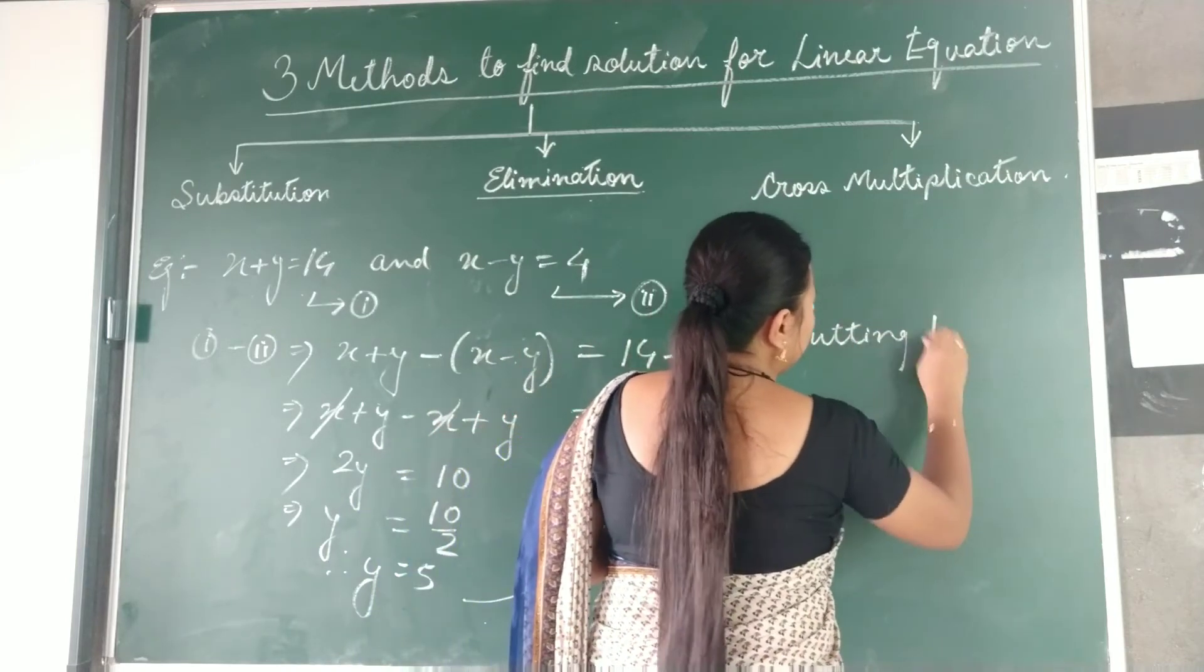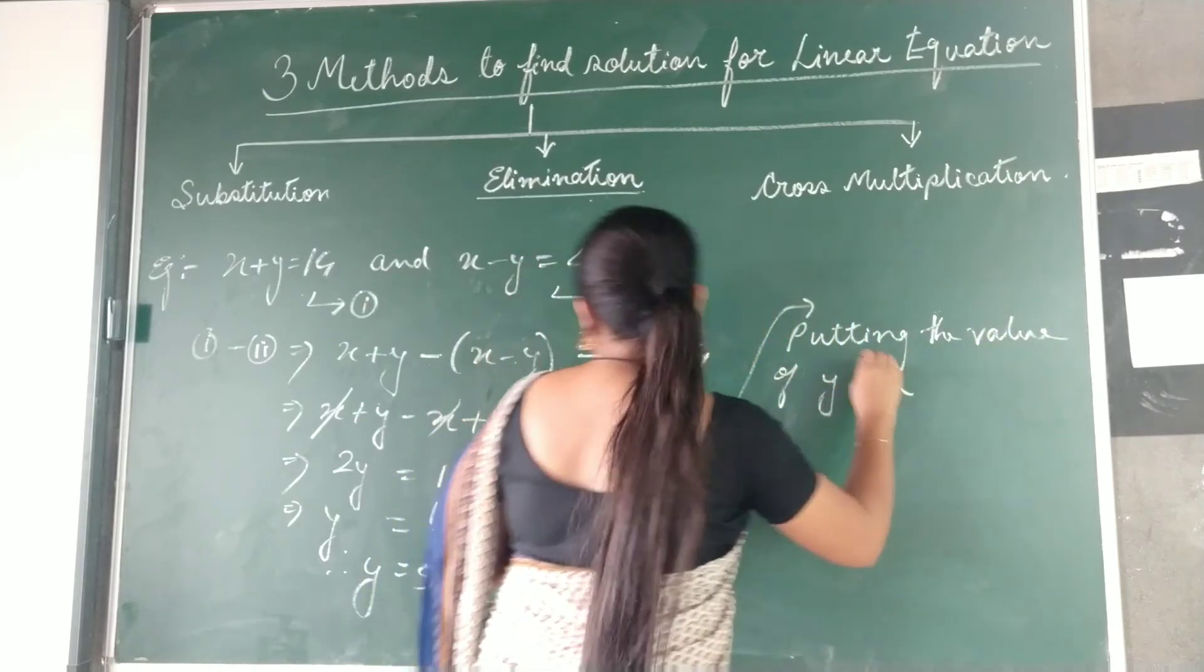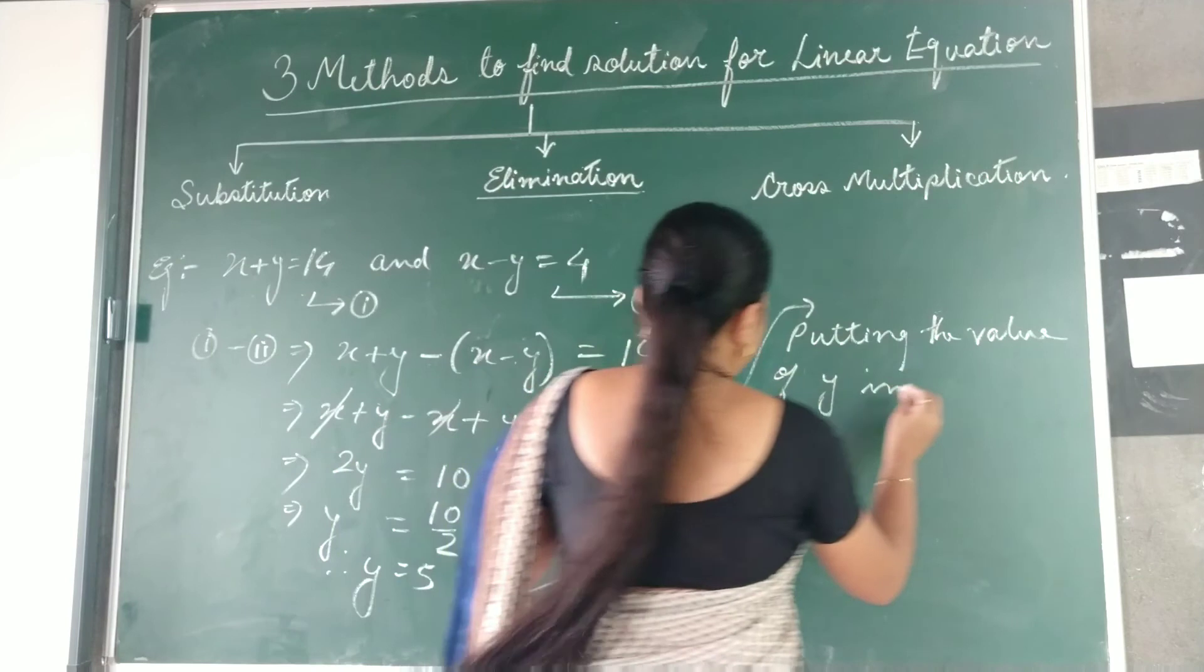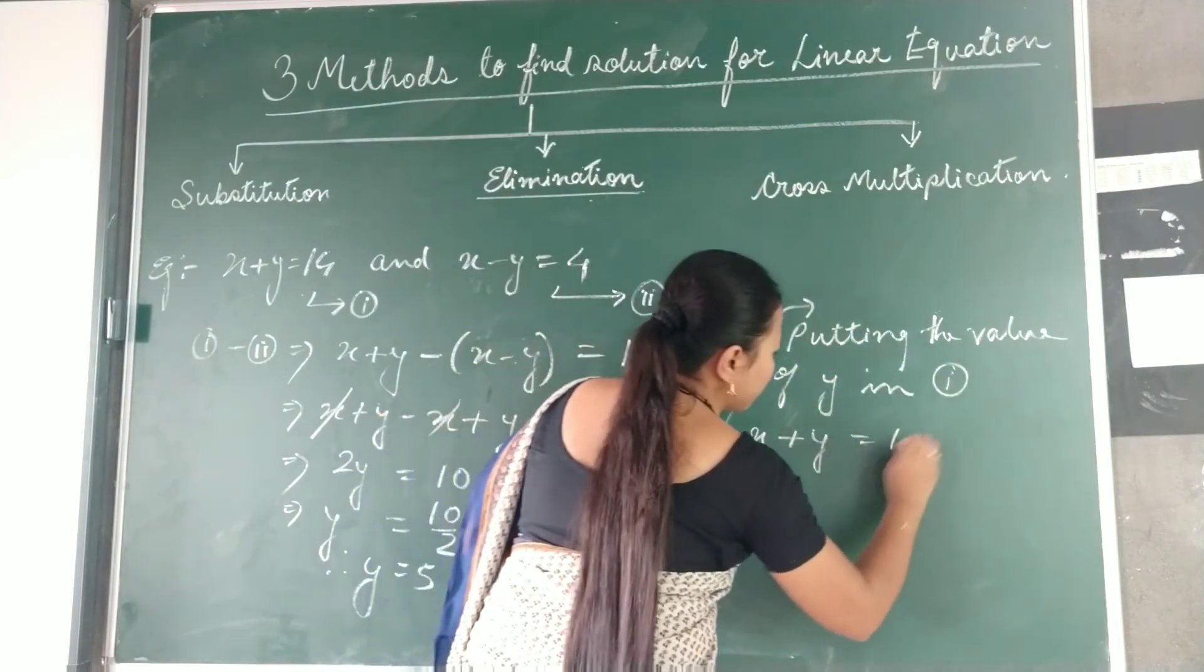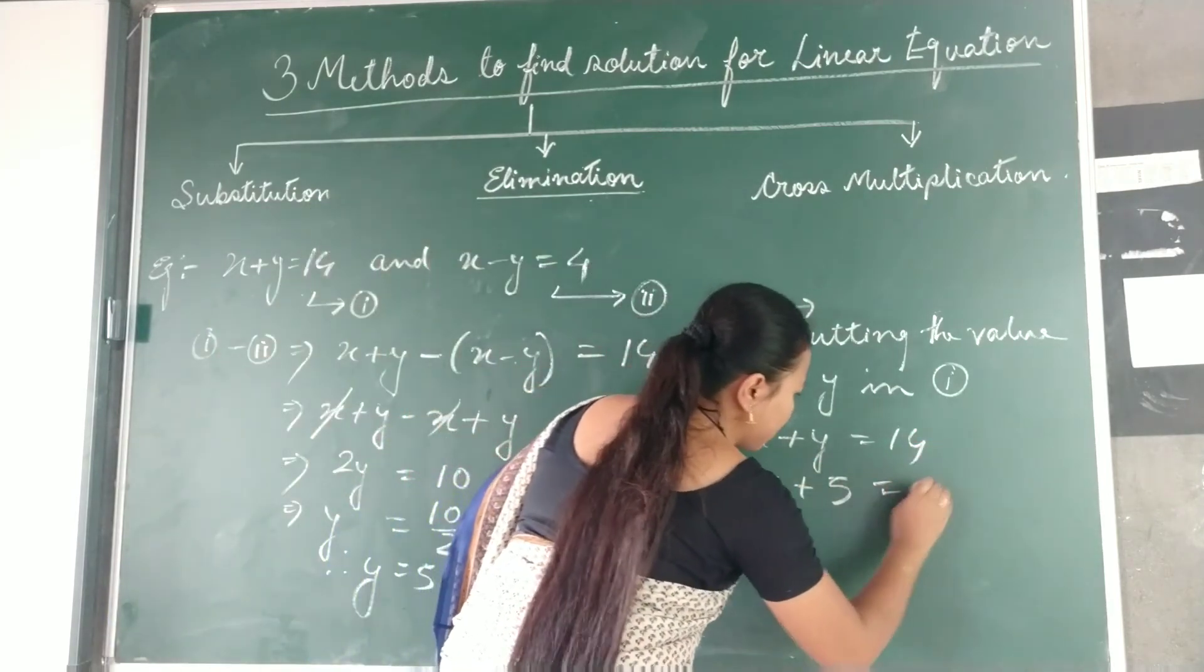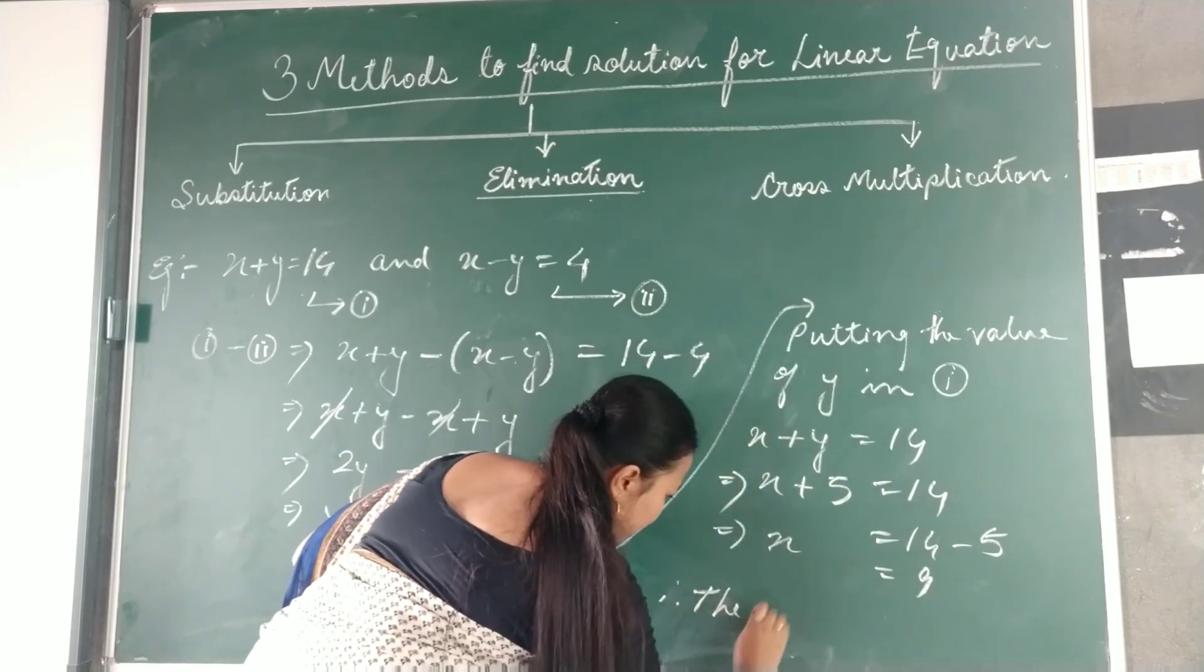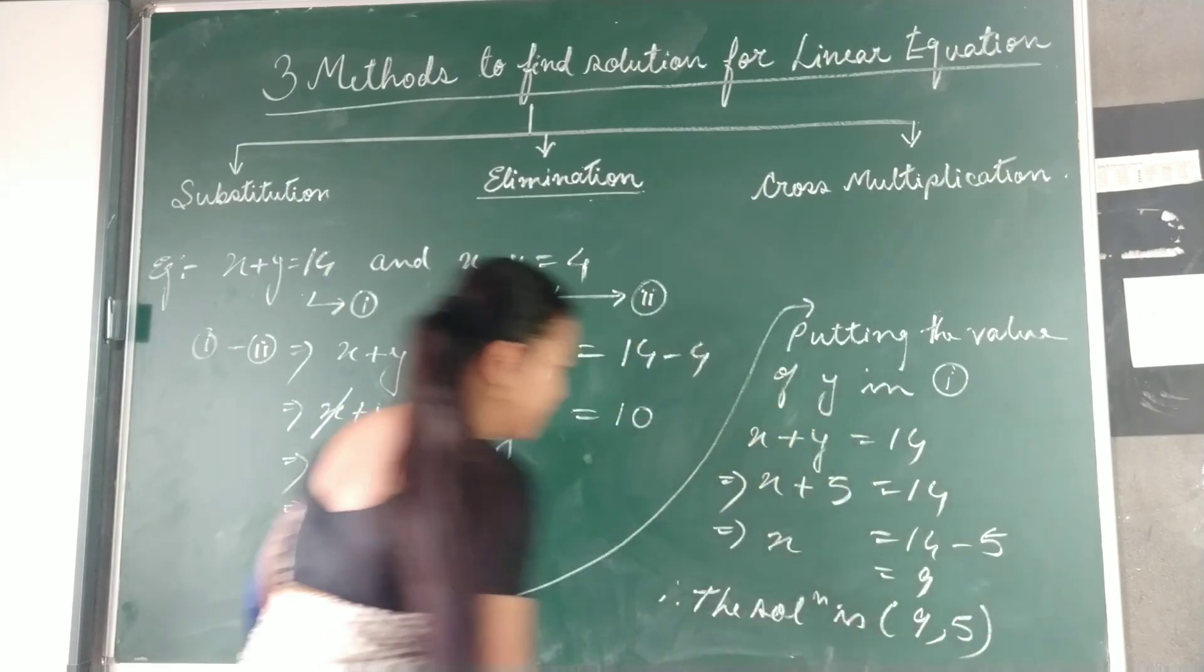Putting the value of y in whichever equation you want, either in equation 1 or 2, you get the correct answer for x. Putting in equation 1: x plus y equals 14. What is my y here? 5. So x plus 5 equals 14. x equals 9. Therefore, the solution is (9, 5).